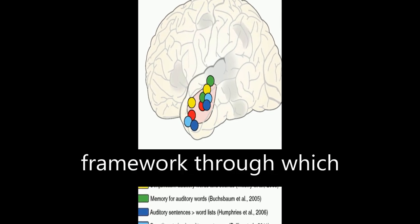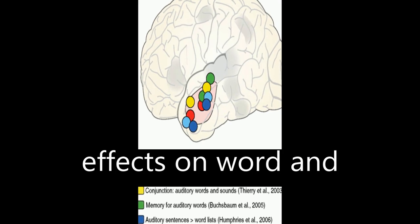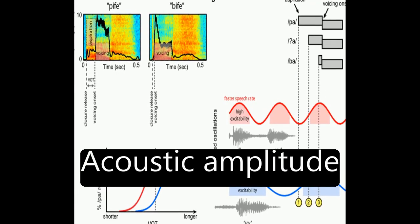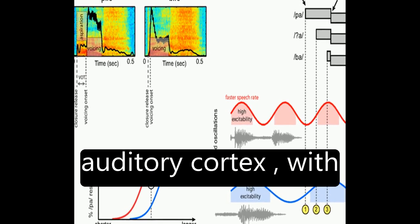The article proposes a framework through which neural entrainment to speech rhythm can explain effects on word and segment perception. Acoustic amplitude modulations are processed largely bilaterally in auditory cortex,